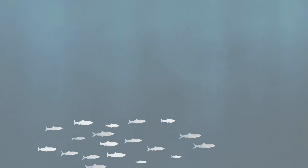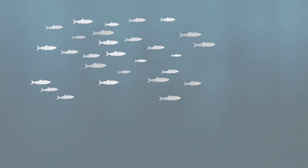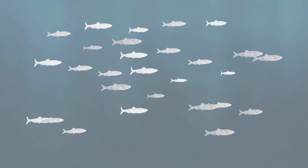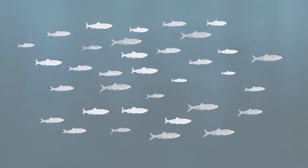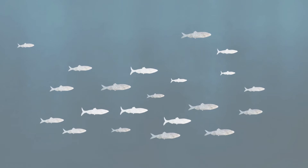Most of these models reduce complexity by focusing on a single species of fish. By estimating deaths and births, among other factors, the models calculate how many fish can be caught without depleting the population.